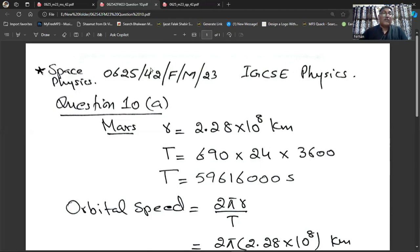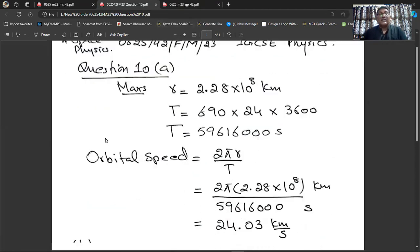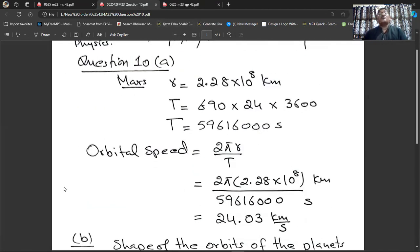The orbital speed of Mars is 2πr divided by T. So, 2 multiply π, multiply the radius whose value is 2.28 times 10^8 kilometers and divided with the time which is 59,616,000 seconds. When you enter these numbers in your calculator and do this calculation, the answer is 24.03 kilometers per second. You can say 24 kilometers per second.